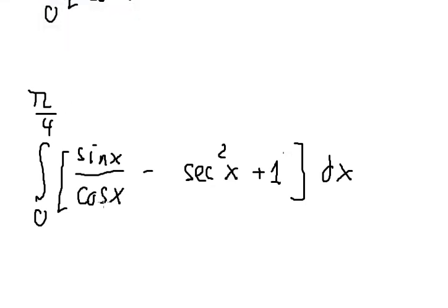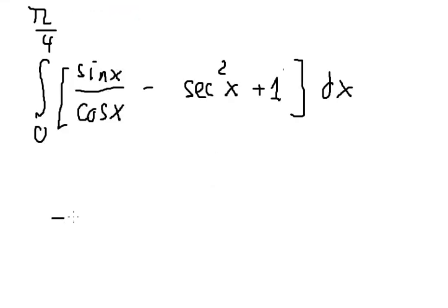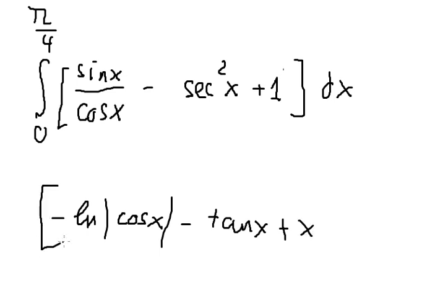The integral of sine x over cosine x gives negative ln of the absolute value of cosine x. The integral of negative sec²x gives negative tan x. The integral of 1 gives x.